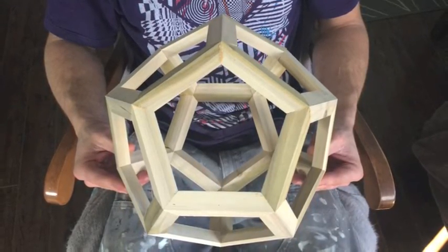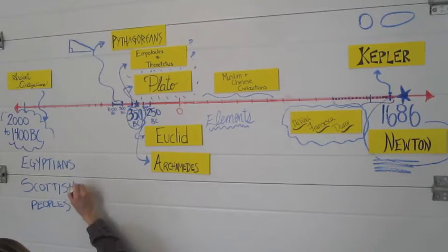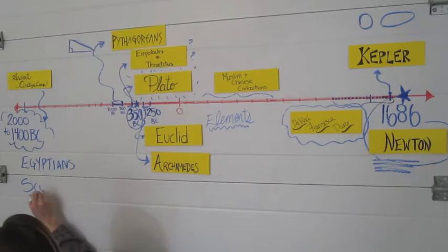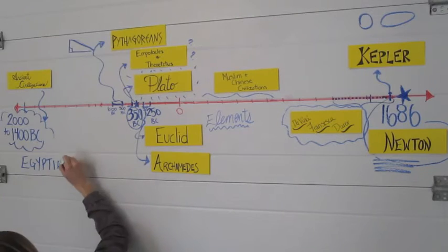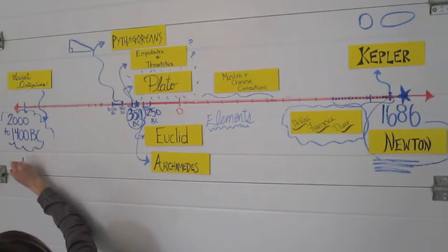Mathematical concepts build over time. Consider for a moment what would our world be like today without the dodecahedron? What if ancient civilizations hadn't created drawings, models, and incredible buildings like the pyramids?